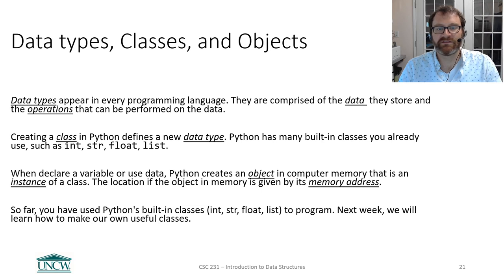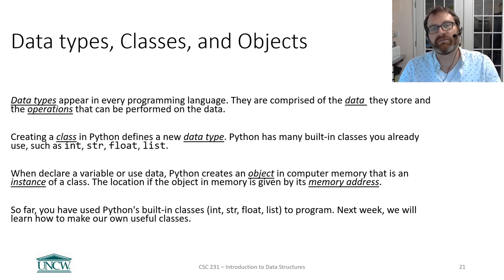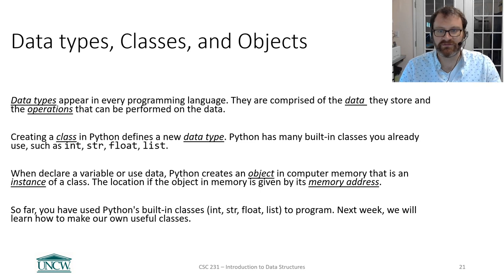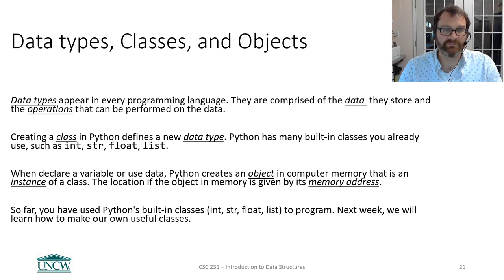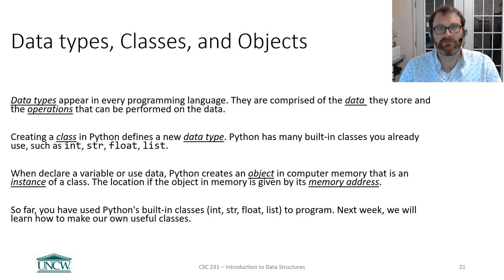When you declare or use a variable, Python creates an object in computer memory that is an instance of a class. This class instance holds particular values, but all different instances of the same class know the same operations — upper, split, strip — all strings can do it. The location of the object in memory is given by its memory address. Study the vocabulary: know the differences between data, values, variables, classes, instances, objects, and methods.